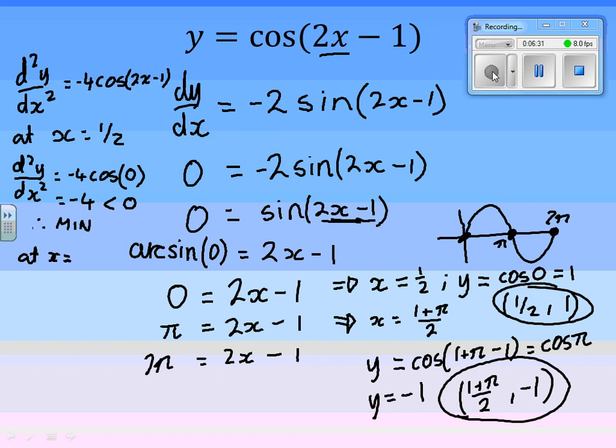At x is equal to 1 plus π over 2, d²y/dx² is equal to minus 4 lots of cos 1 plus π minus 1, which is equal to minus 4 lots of cos π. And cos π is minus 1, minus 4 times minus 1 is plus 4, which is larger than 0. So therefore, at x is equal to 1 plus π over 2, it's a minimum.